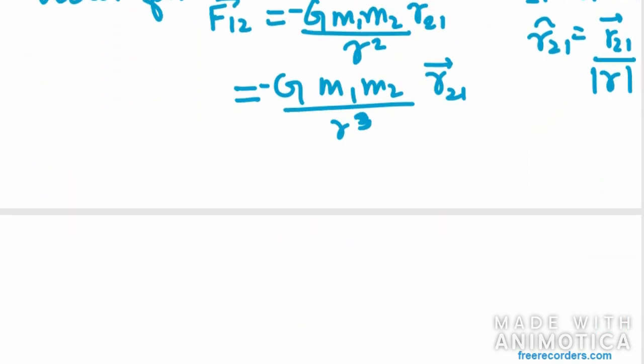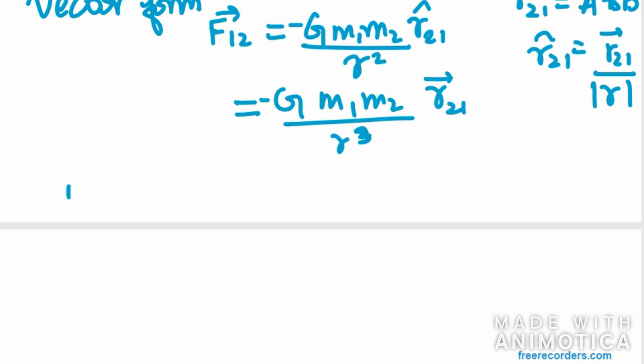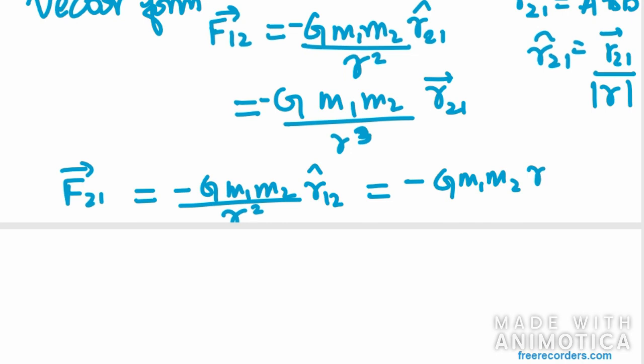Now I would be writing F21. So F21 can be written as -G·m1·m2 over r², and r̂12. And r̂12 can be again replaced. So G·m1·m2, r12 vector.